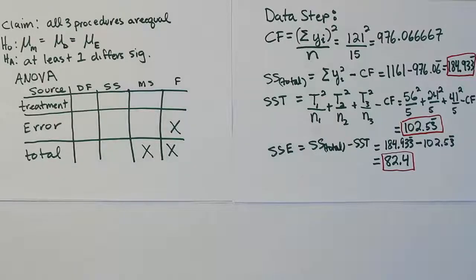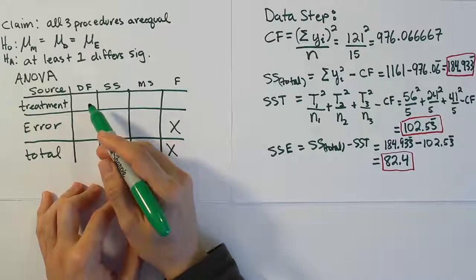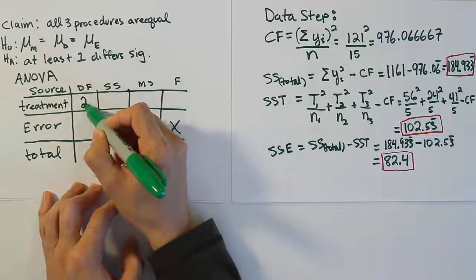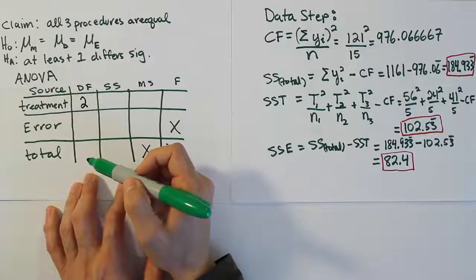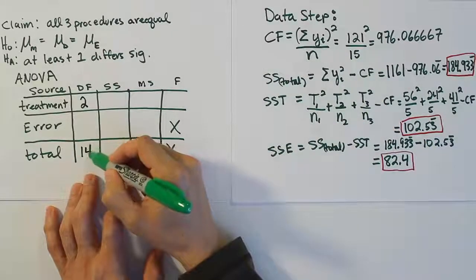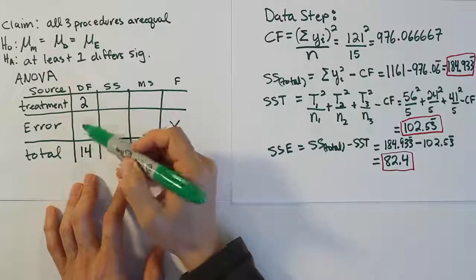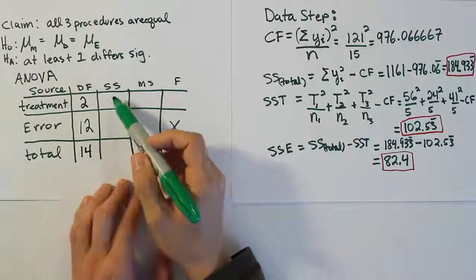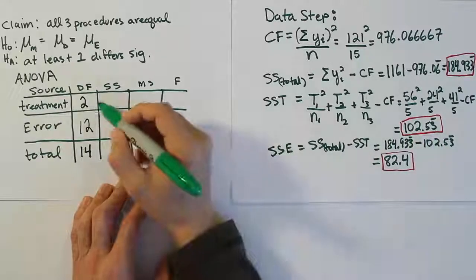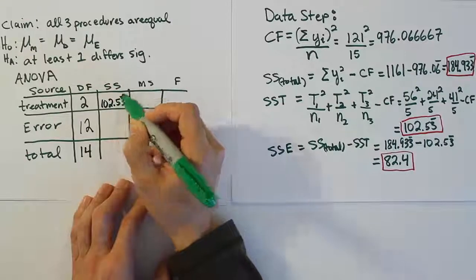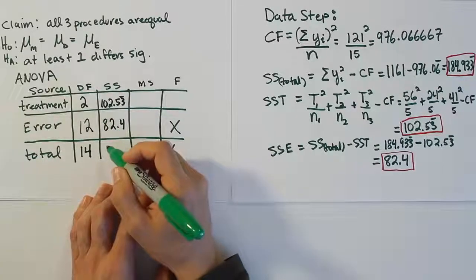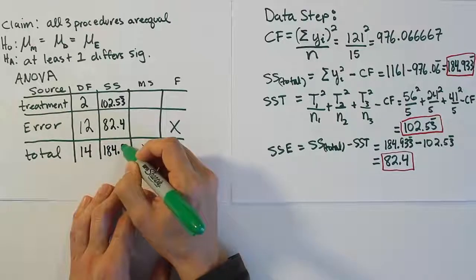Now we fill in the ANOVA table. Degrees of freedom for treatment = number of treatments − 1 = 3 − 1 = 2. Degrees of freedom for total = total sample size − 1 = 15 − 1 = 14. Degrees of freedom for error = 14 − 2 = 12. The sum of squares for treatment is 102.5333, for error is 82.4, and for total is 184.9333.